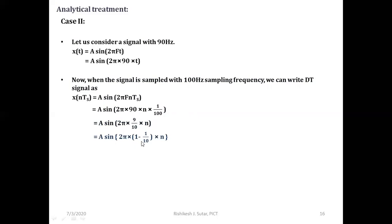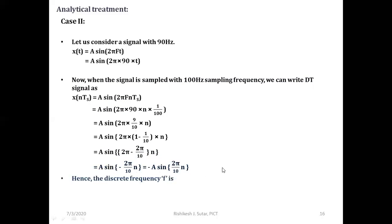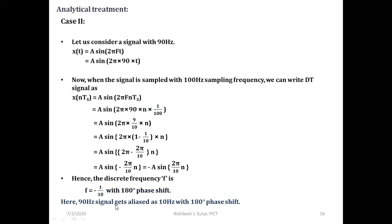Here 9/10 can be written as 1 − 1/10, so I can write A sin(2π − 2π/10 × n). Using the identity sin(2π − θ) = sin(−θ) = −sin(θ), I can write A sin(−2π/10 × n) = −A sin(2π/10 × n). Hence the discrete frequency f is −1/10. As the sign is negative, there is a 180° phase shift, meaning the 90 Hz signal gets aliased as 10 Hz with a 180° phase shift.